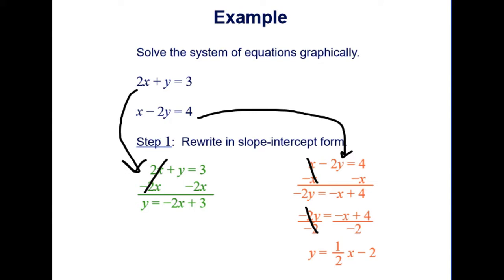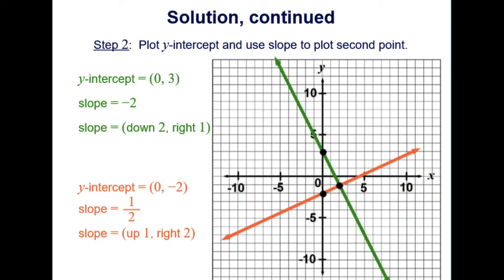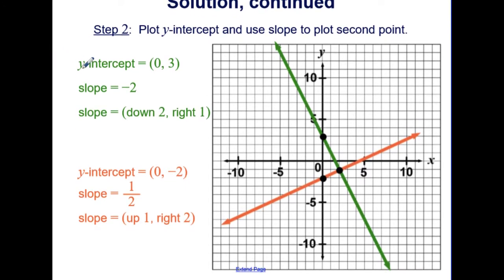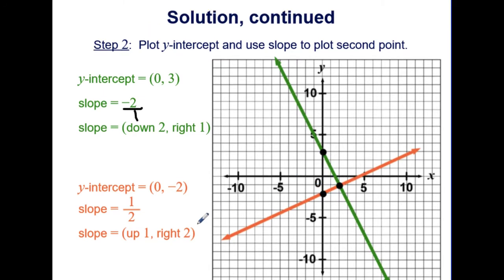Now that both are in slope-intercept form, we use that form to find the y-intercept and slope to graph. The green line has a y-intercept of (0, 3) and a slope of negative 2 over 1, going down 2 and right 1. The orange line has a y-intercept of (0, negative 2) and a slope of one-half, so we go up 1 and right 2.